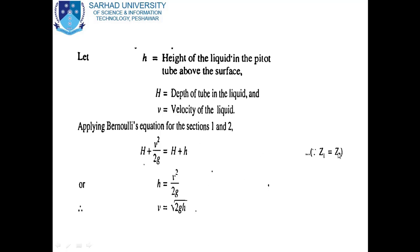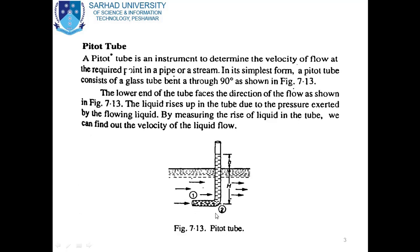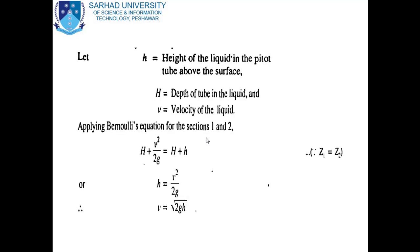Here, z₁ = z₂ in Bernoulli's equation because both sections lie on the same axis, or the height of both sections above the datum is the same. Therefore, z₁ and z₂ cancel out.